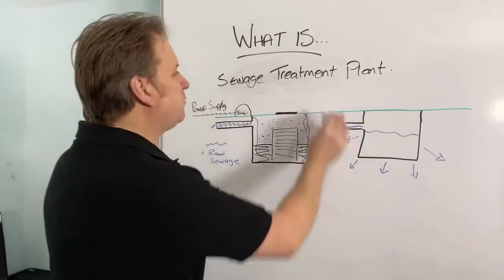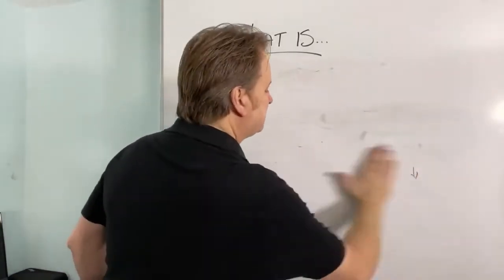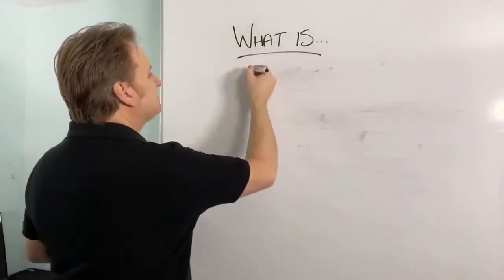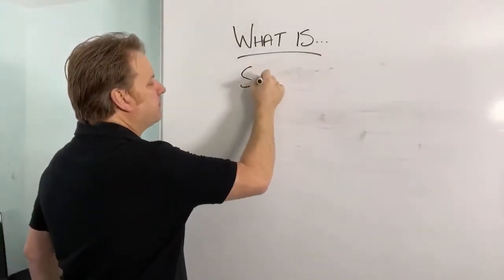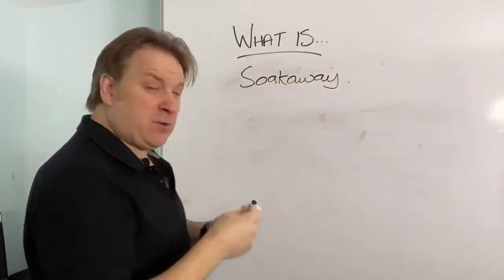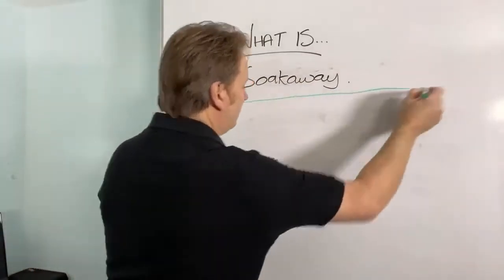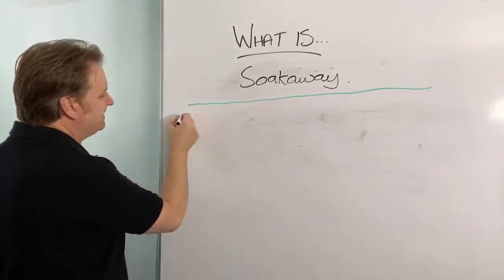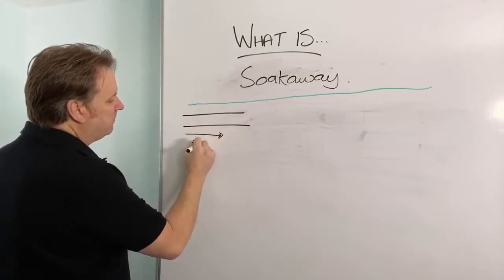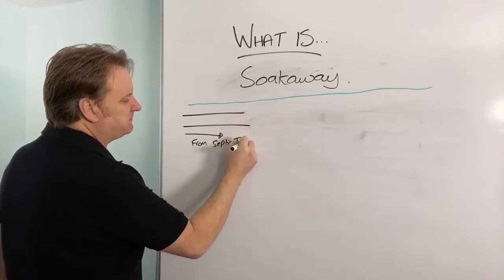So now let me just show you one more thing here. So let's just wipe all that out. So one more thing to show you. So what is a soak away? So what's a soak away? Well, I've explained what a septic tank and a cesspool and a sewage treatment plant is. Now, if I just do it here, so this pipe coming in from here, that is from the septic tank, let's just keep it really simple, from the septic tank.